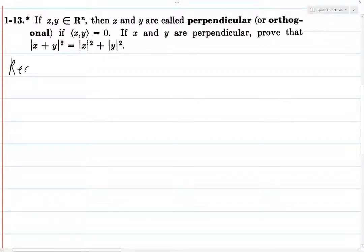So first let's recall that the norm of z is the same as the square root of the inner product of z with itself, and we know that from the textbook. That implies that the norm of z squared is the inner product of z with z, because you just square it.